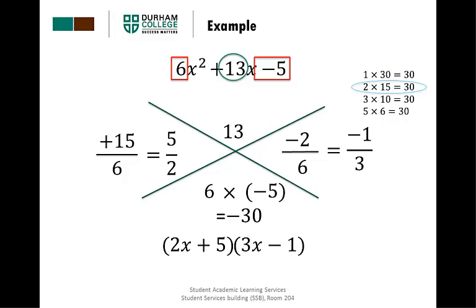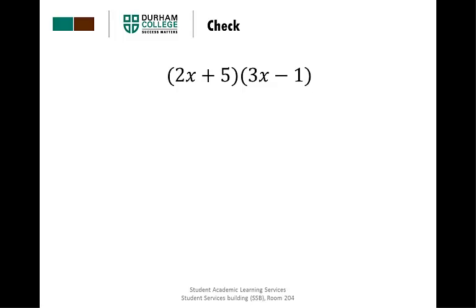Now that we have our factors, we want to check to make sure that they're right. We do that by expanding our factors out. And if we get back to our original trinomial, we know we're correct.